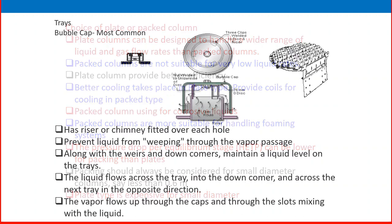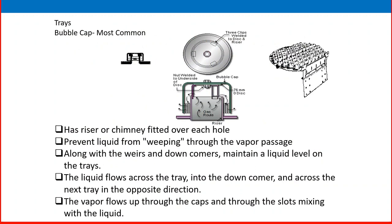The most commonly used internals in a plate column are bubble cap internals. A single bubble cap maintains a liquid level; gas enters through the riser or chimney, lifts the cap, and the gas bubble escapes through the slots, passing through the liquid to the next stage. The chimney fitted over each hole prevents liquid from weeping through the vapor phase when gas flow stops — the bubble cap seals tightly at rest.